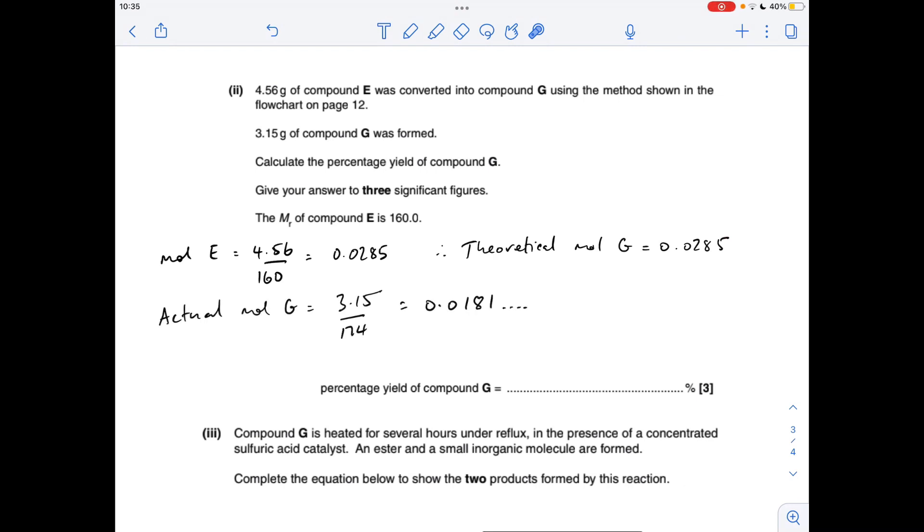Next thing we do is work out the actual moles of G that's formed: mass over the Mr of G. That's coming out at 0.0181. I've kept the full number in the calculator, of course. To turn it into a percentage yield we do the actual moles produced divided by the theoretical moles times 100. We get a calculator value of that, and to three significant figures: 63.5 percent.